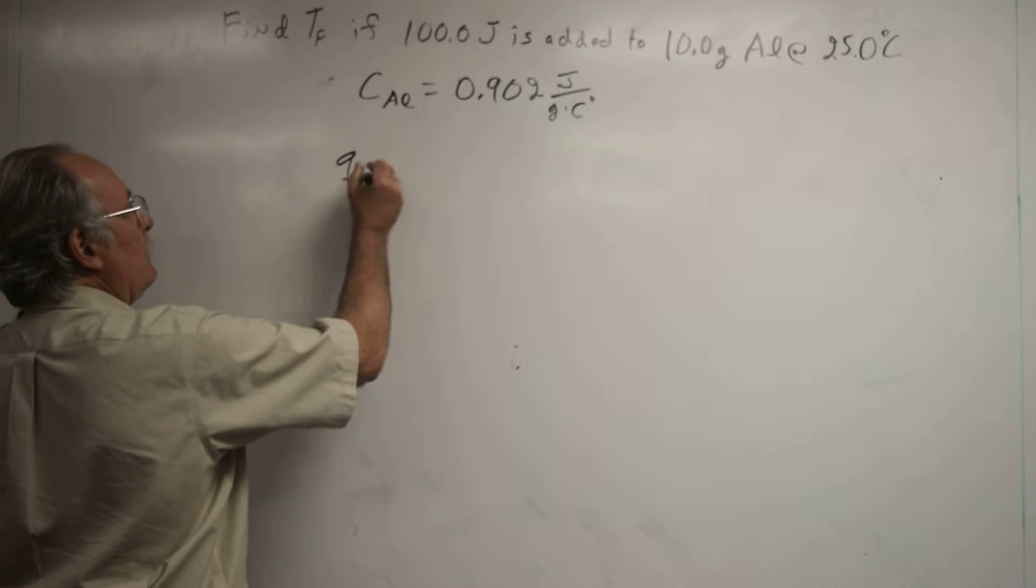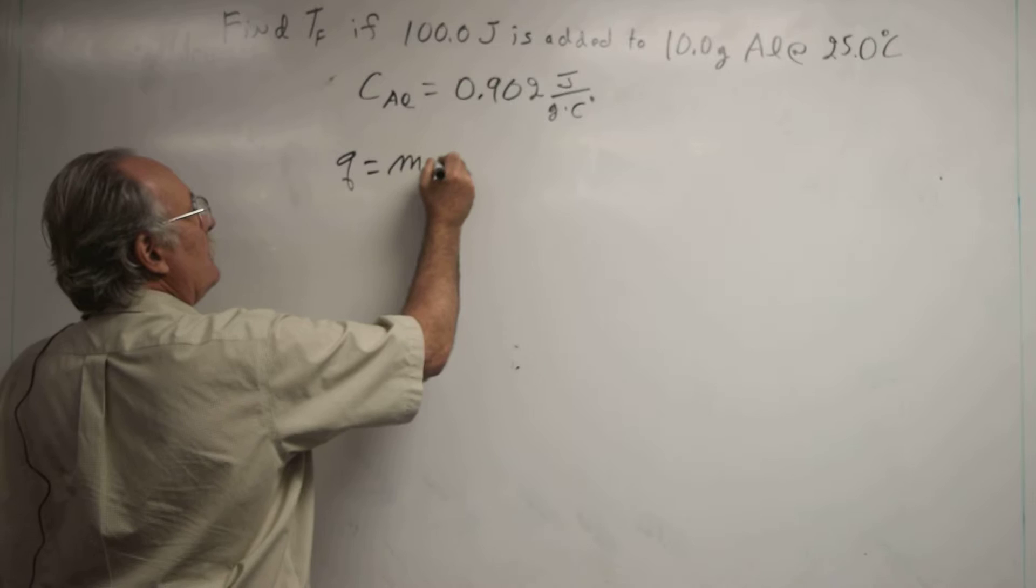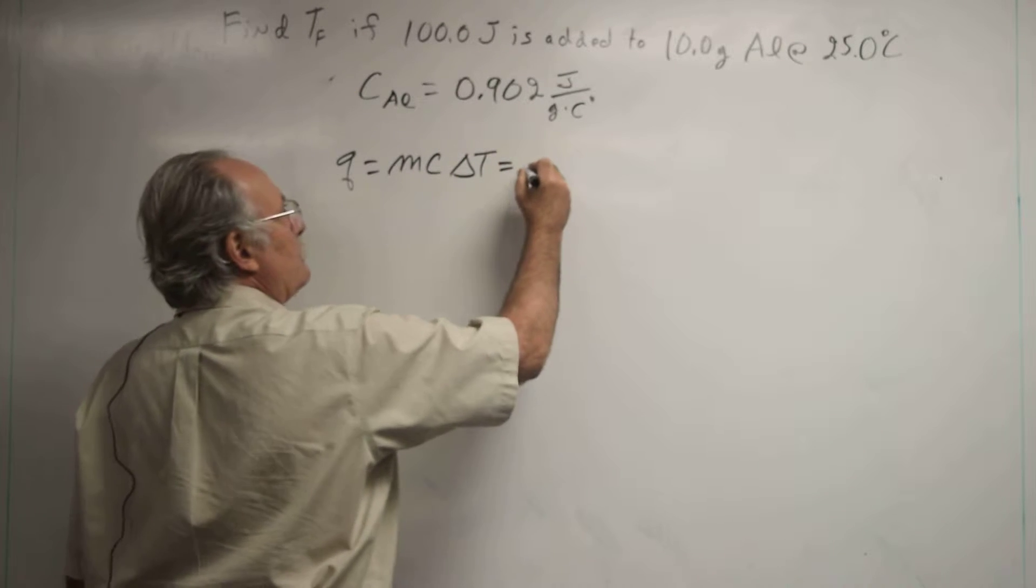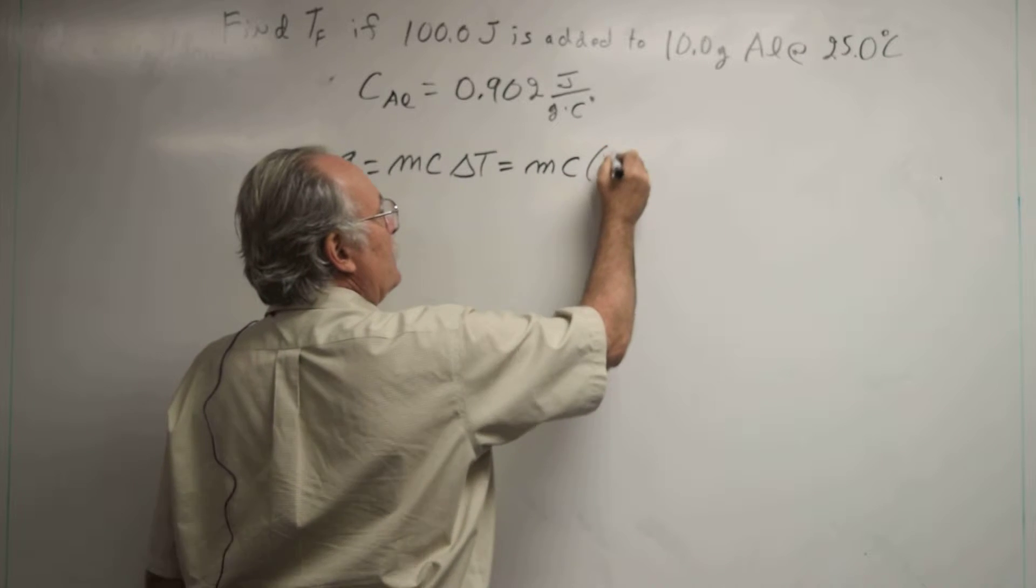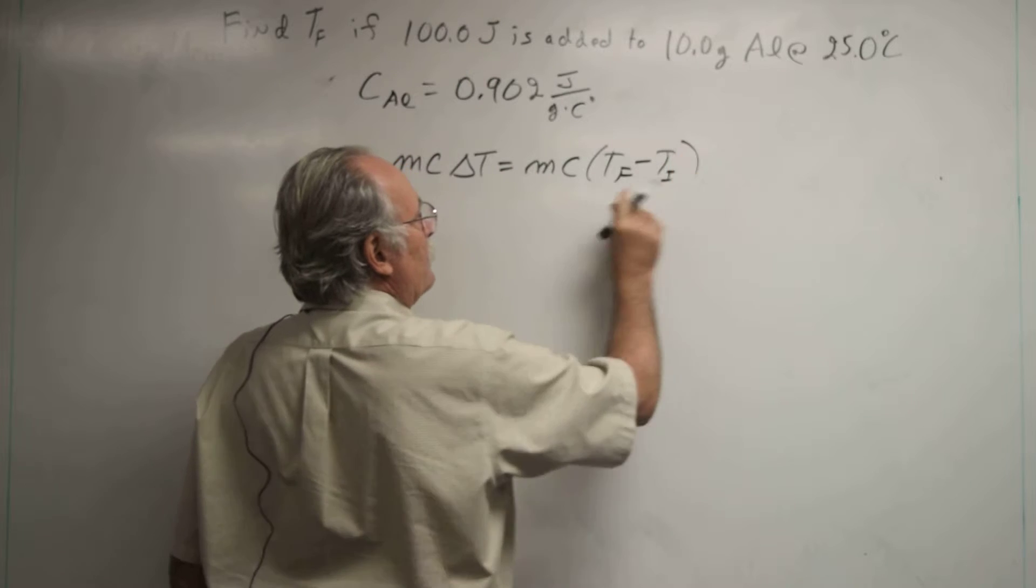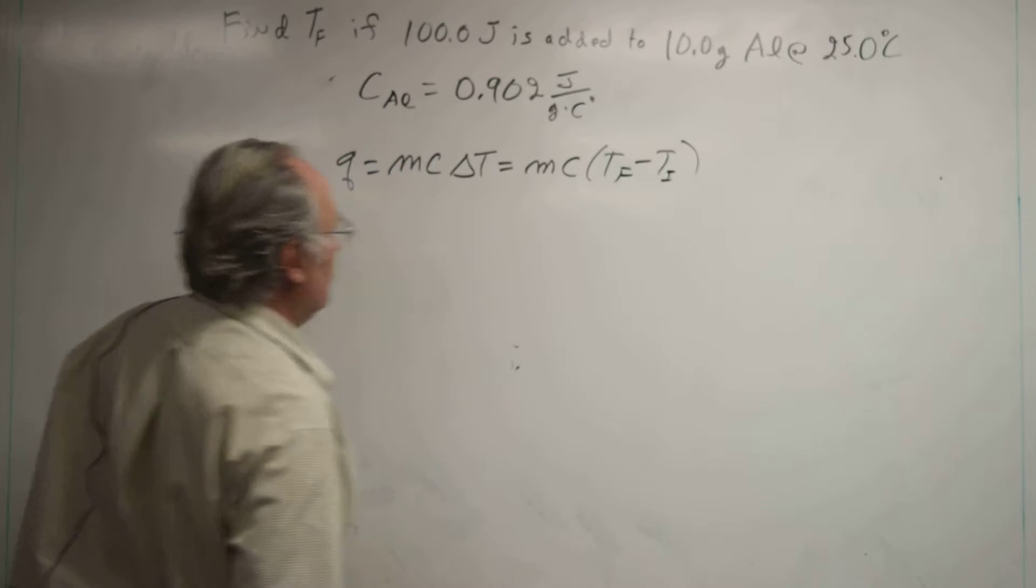We know that heat equals mass times specific heat capacity times temperature change: q = mcΔT = mc(Tf - Ti). Remember that temperature change is always final minus initial.